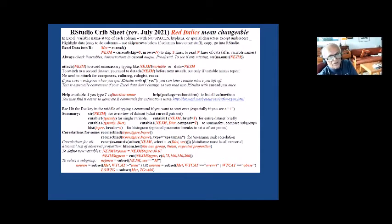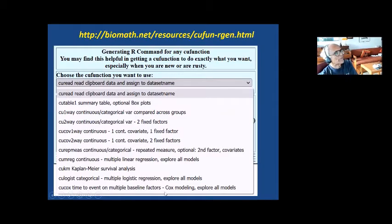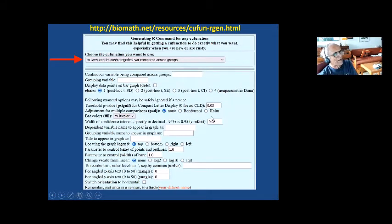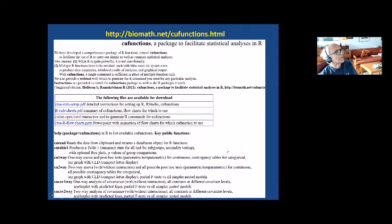The crib sheets are available on the resources page. We have a web tool you can play with — you can start using R functions for your own data, choose a function, and it will help you figure out the R command to put into RStudio for your analysis. You can copy-paste that. This is an overview of CU functions with detail about what each function does.